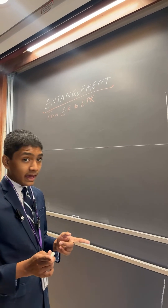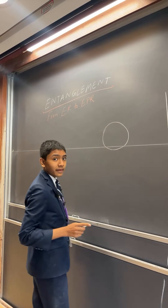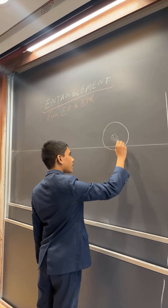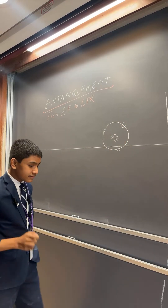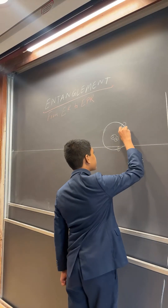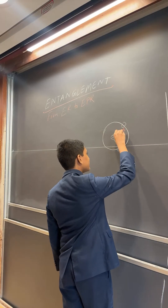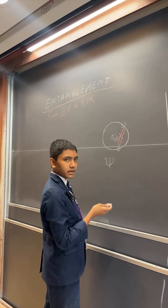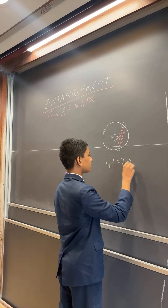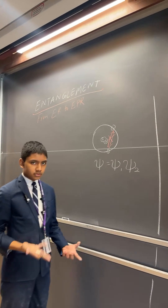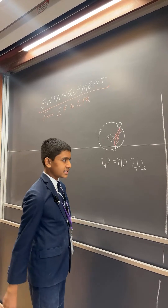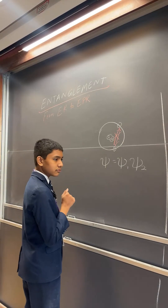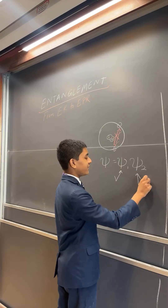Remember that when we were talking about the helium atom, we said if the two electrons didn't interact with one another — if we pretend that this interaction didn't exist — then the wave function describing both of them would have just been the product of the wave functions describing the individual particles independently, as they would have been in the hydrogen atom. What counts is that this is a product. It's been factorized.